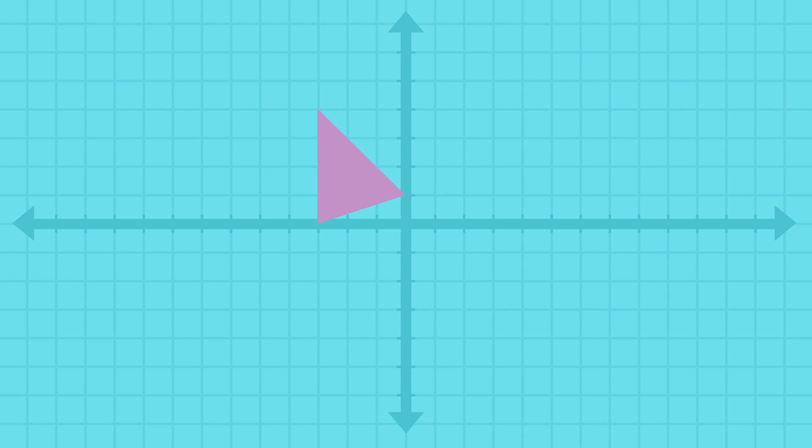Then, to show where the shape is moving, we can use a mapping notation, like this, to show the translation.